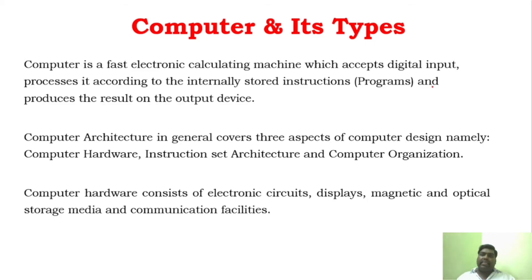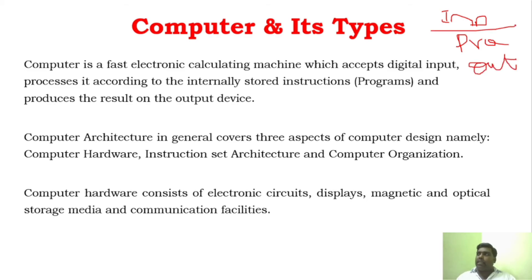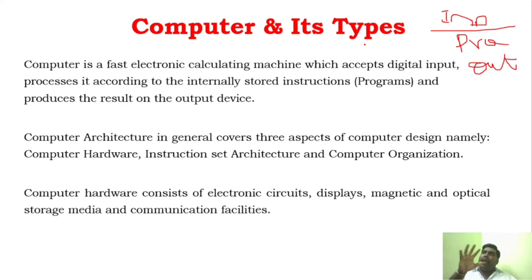There are three important processes to understand. One is the input device, another one is the processor, and another one is the output. We give information through the input device, that information is executed in the processor based upon the instructions already stored in the memory, and then the output of that execution is sent to the output device.